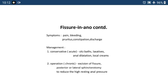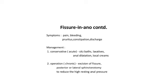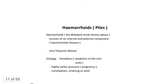Management of acute fissure in ano is usually conservative: sitz bath, laxatives, anal dilatation, and local creams. For chronic fissure, operative treatment includes excision of the fissure and posterior or lateral sphincterotomy to reduce the high resting anal pressure and relieve constipation. Here we have a picture showing a posterior fissure.